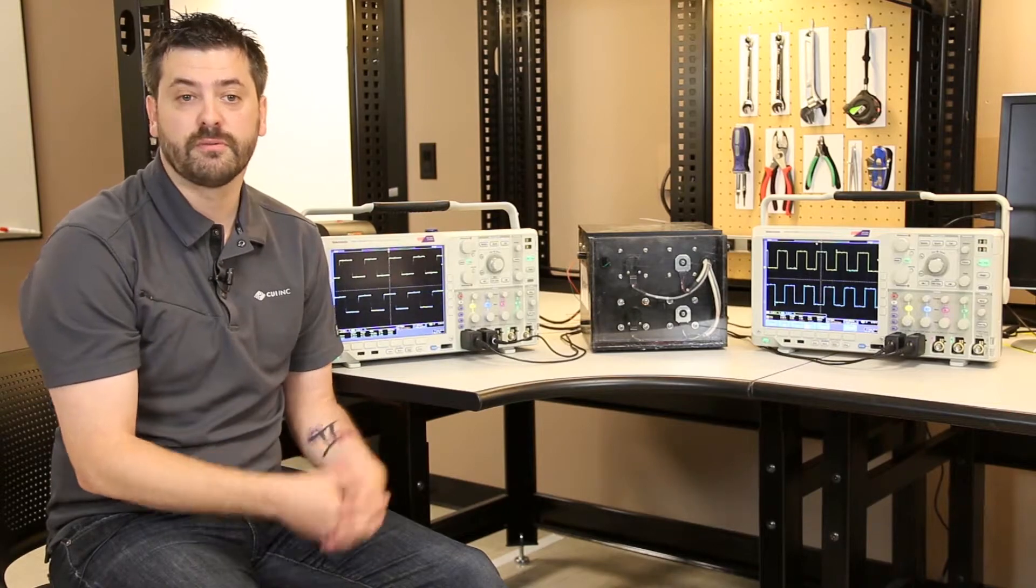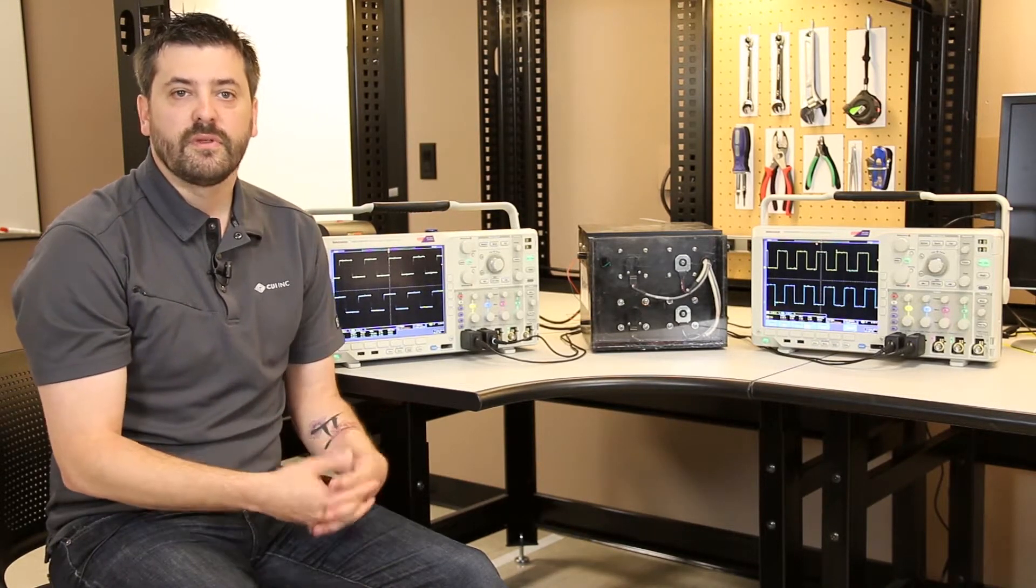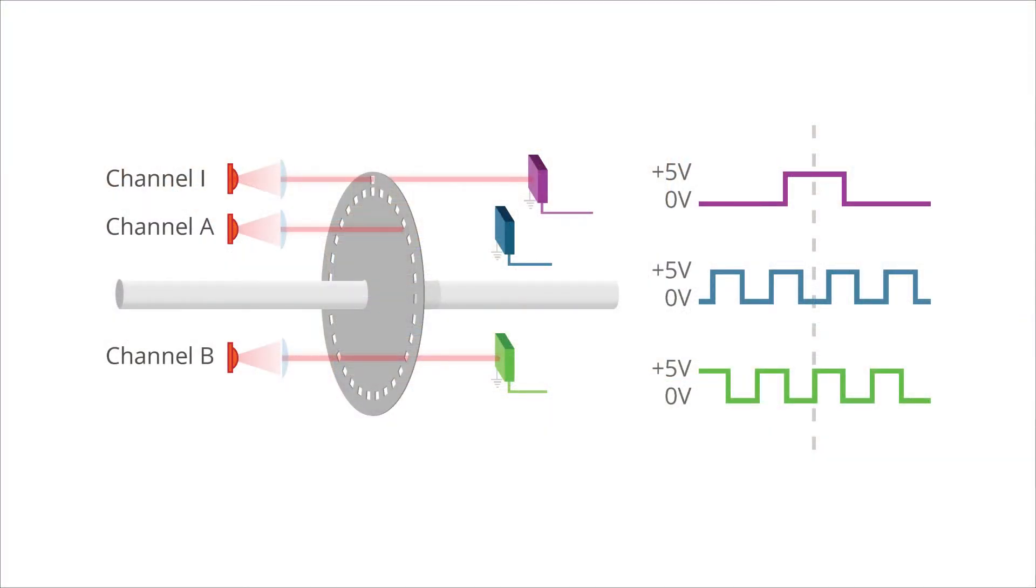Unfortunately, this is one of the areas where optical encoders fall short, particularly with the dust, dirt, and oil in the environment. Optical encoders require line of sight, and if it's a dirty or dusty environment or a lot of oil in there, that can drastically influence the performance of that optical encoder.